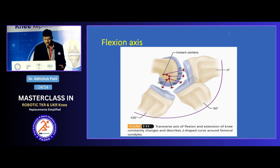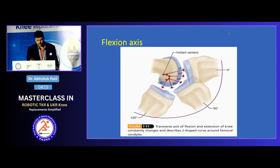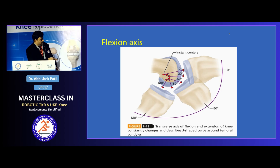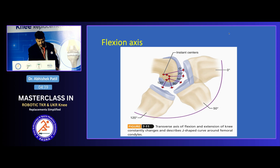The flexion axis of the knee is not the same throughout motion. If you plot the centre of rotations at 0 and 20 degrees and various other degrees of flexion, and then draw a line matching all of them, you will see that it forms a J-shaped curve of flexion.